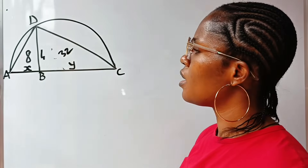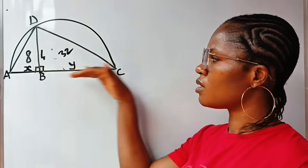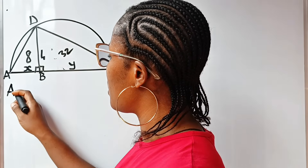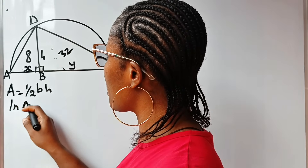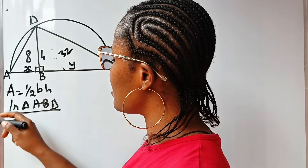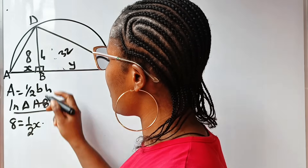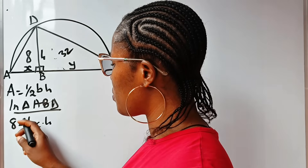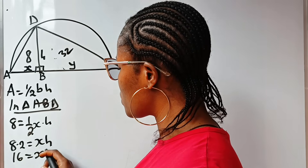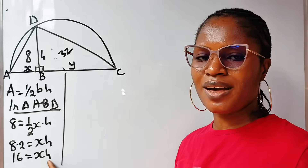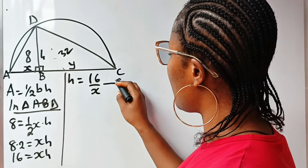This is 32. Area of a triangle — remember that this is the height, so it's perpendicular to the base. Area of a triangle is equal to half base multiplied by height. So in triangle ABD, the area, which is 8, is equal to half multiplied by the base X multiplied by the height H. If we cross-multiply, we have 8 times 2 equals X times H, so 16 equals XH. Making H the subject: H equals 16 divided by X. Let's call this equation 1.